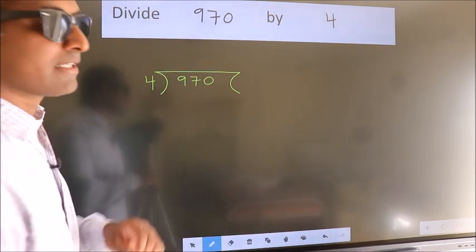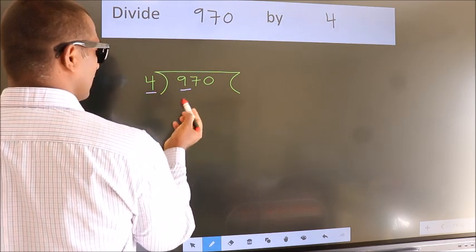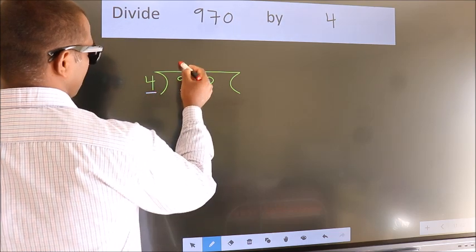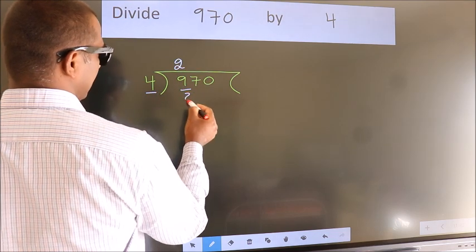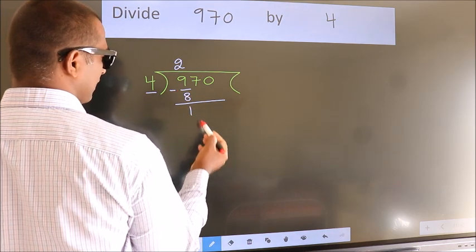Next, here we have 9, here 4. A number close to 9 in 4 table is 4 2s 8. Now we should subtract. We get 1.